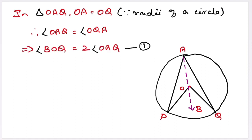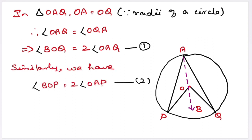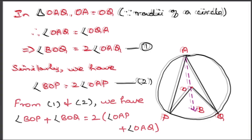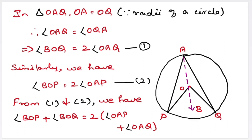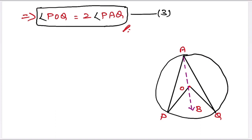Which gives angle BOQ is equal to two times angle OAQ — this is equation 1. Similarly, we have angle BOP is equal to two times angle OAP — this is equation 2. From equations 1 and 2, we get angle POQ is equal to two times angle PAQ — this is equation 3.